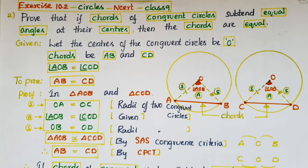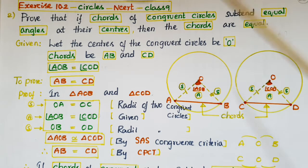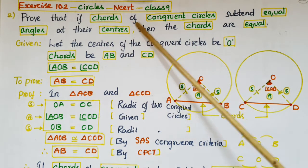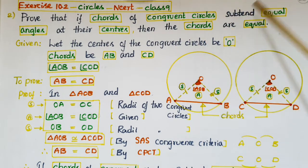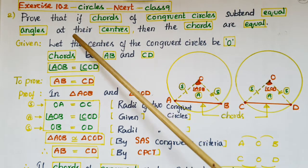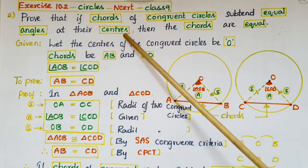Hello everyone, today I am going to present the solution of the second problem from Exercise 10.2 from the Circles chapter from NCERT Class 9. In this problem, prove that if chords of congruent circles subtend equal angles at their centers, then the chords are equal.